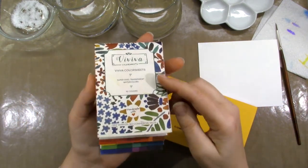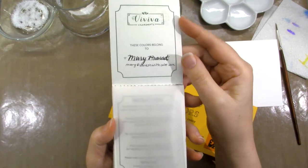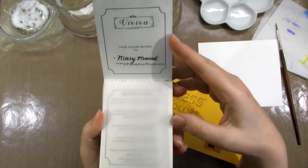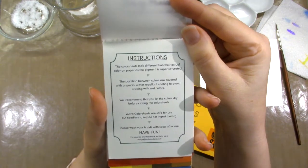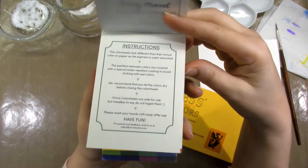The Viviva Color Sheets has an area inside the front cover where you may put your name in case you lose them. The next page has instructions. Then there are 4 sections, each with 4 colors, for a total of 16.